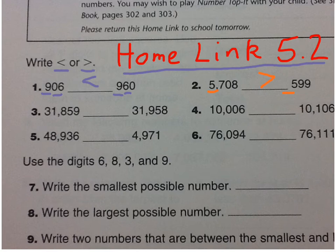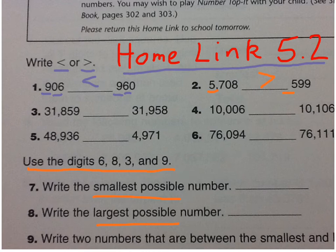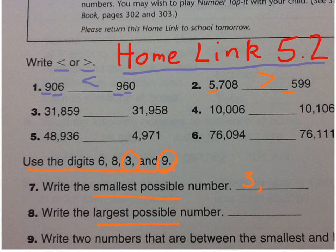As you do the rest of these, just be careful to pay attention to the place value. Down here for numbers 7 and 8, you're going to use these digits to make two numbers — the smallest possible number and the largest possible number. The smallest possible number starts with the smallest digit in the thousands place. There are four numbers, so you'll have a four-digit number. The smallest digit we have is 3, so start with 3. For the largest possible number, the largest digit is 9, so start that one with 9.